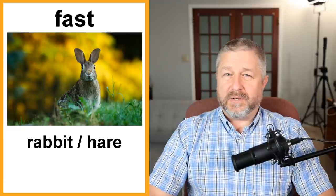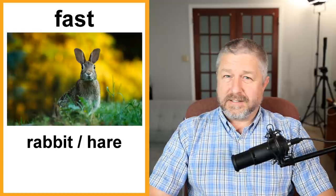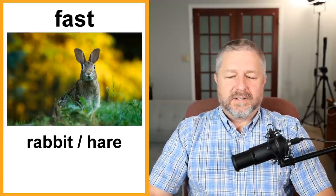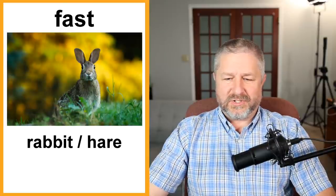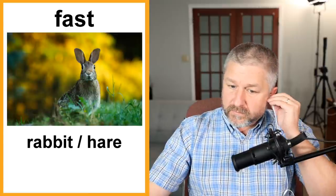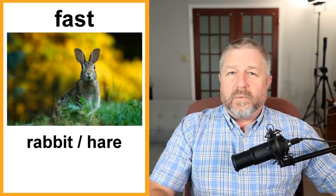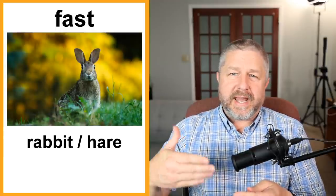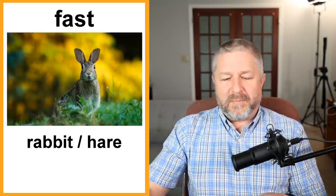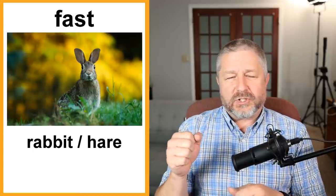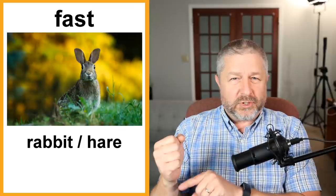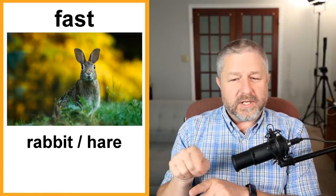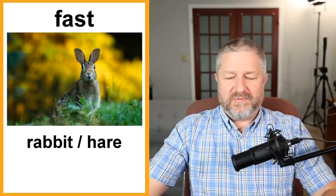Fast — the animal that might come to mind when you think about fast is the cheetah, one of the fastest land animals. We might also think about the rabbit or hare. Rabbit and hare are fairly similar; a hare might be a slightly bigger rabbit. A turtle is considered slow; a rabbit is considered fast. In fact, on my tractor there's a lever — at one end there's a turtle symbol and at the other end there's a rabbit. Put it on the turtle and the engine goes slowly; put it on the rabbit and it goes very, very quickly.